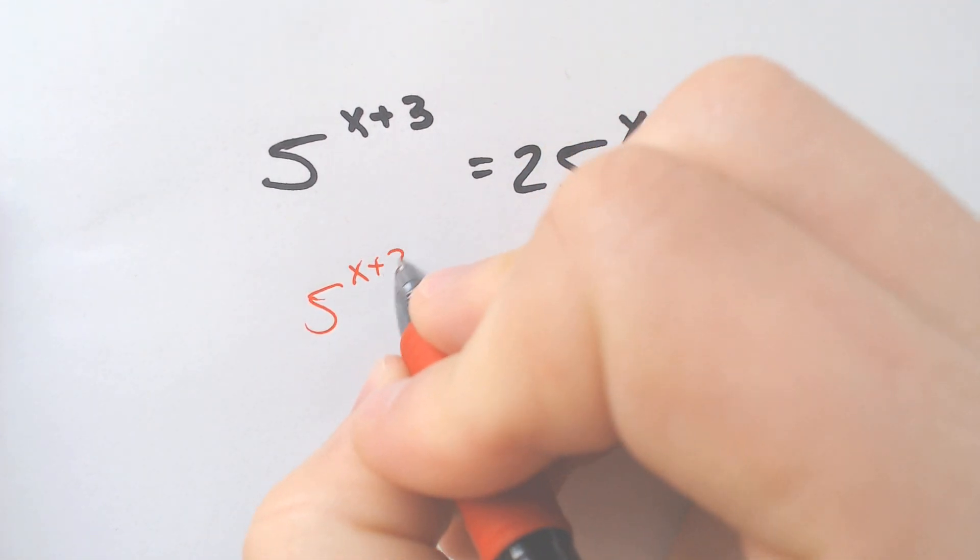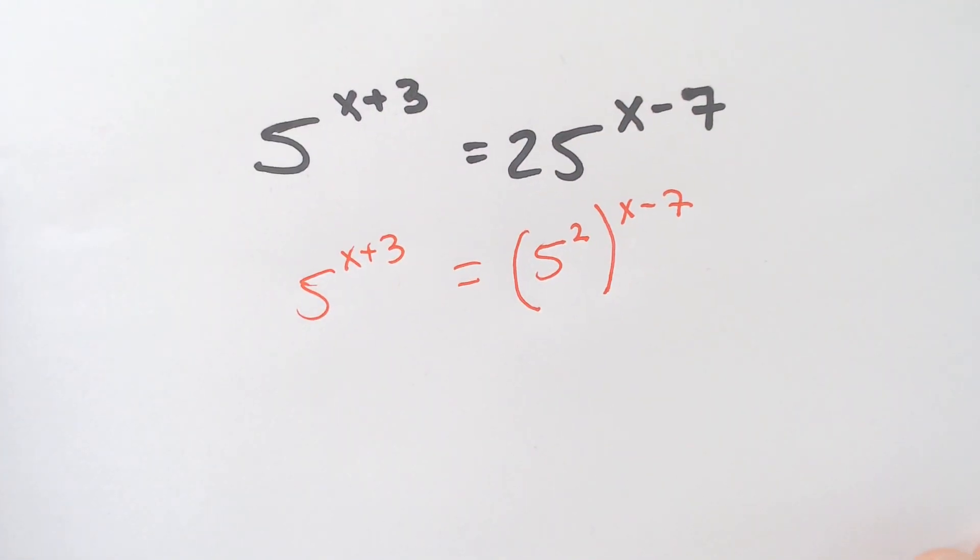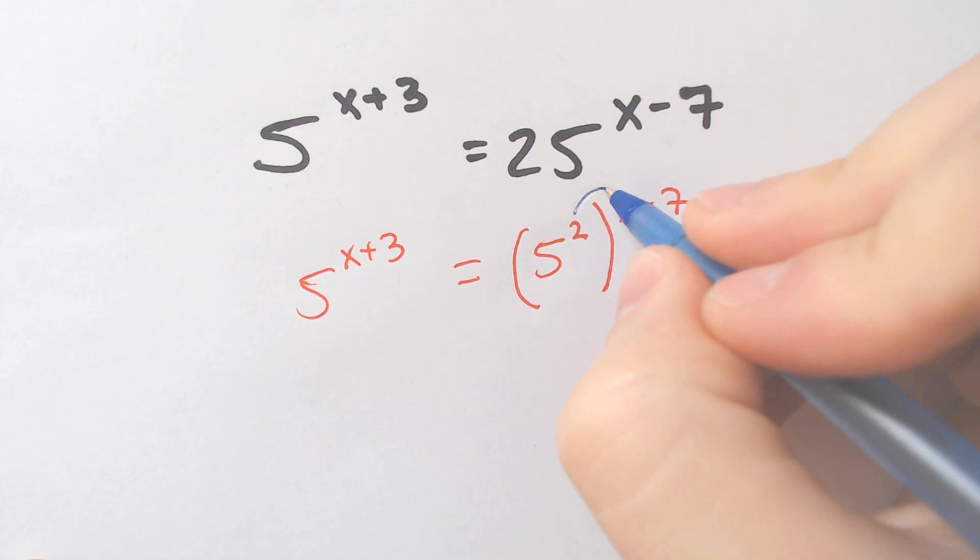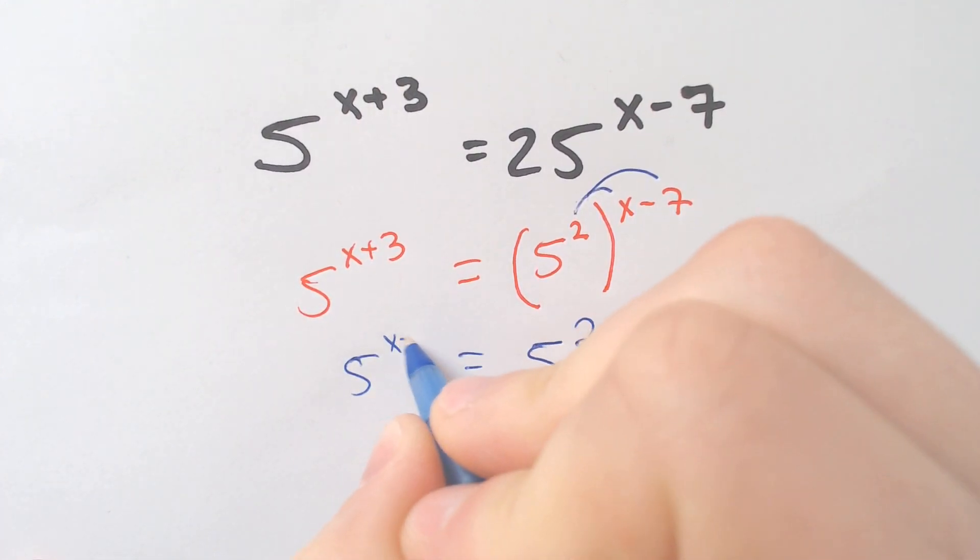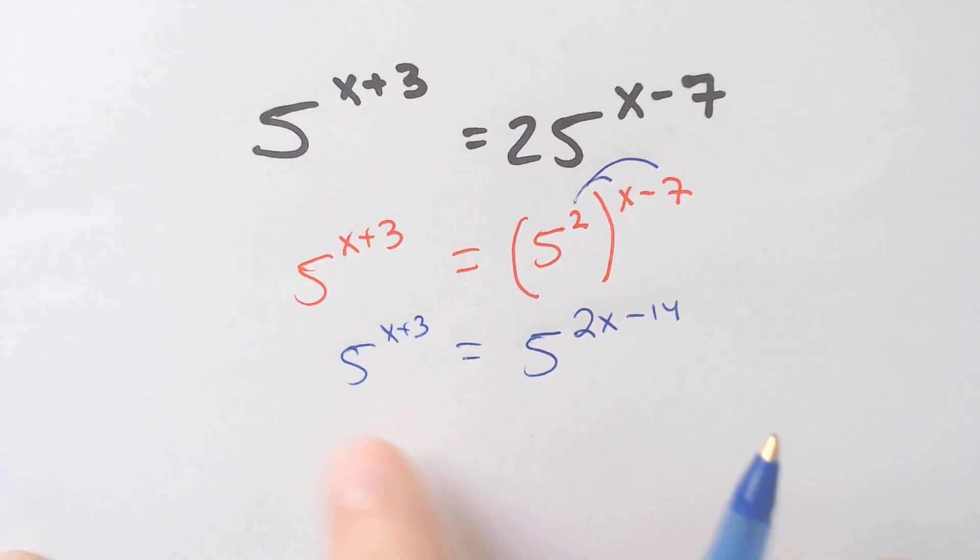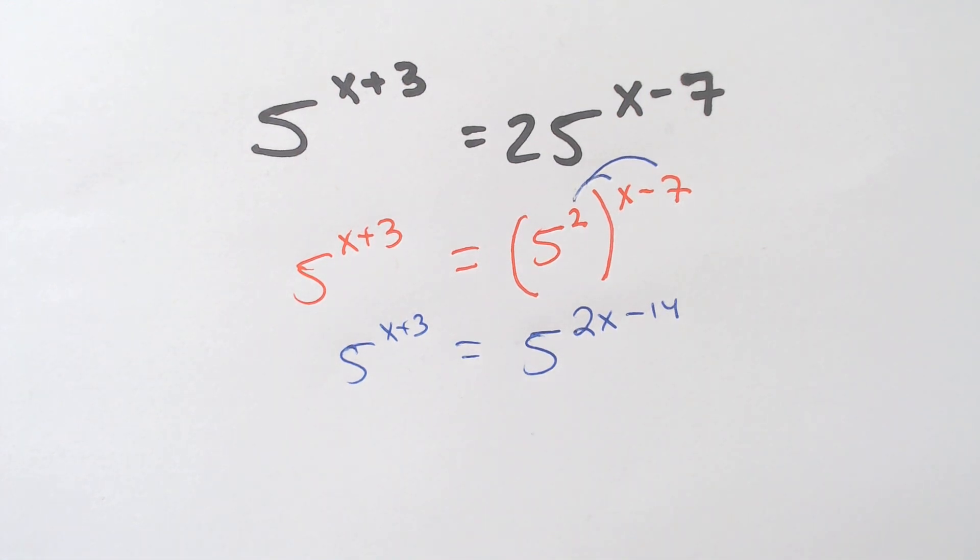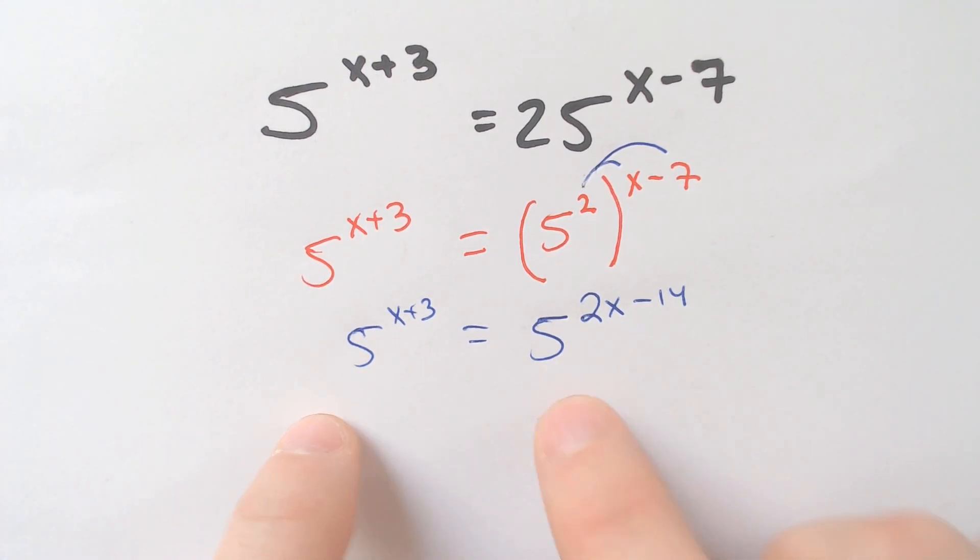So now we have a scenario which would be a lot easier to deal with because this 5 squared is just 25. We haven't changed anything, but we can distribute the 2, making this 5 to the 2x minus 14 is equal to 5 to the x plus 3. And the 5s would just fizzle away because they're both 5 to what power?